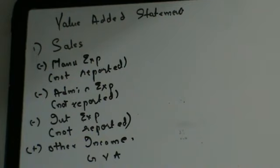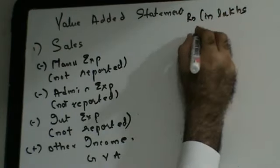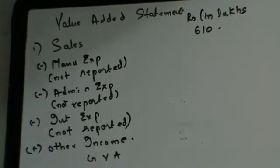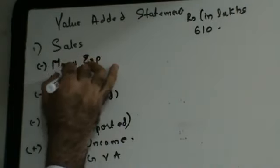Looking at your income statement, your sales is 610 lakhs. So I write this as rupees in lakhs — 610. The next thing is to find out the manufacturing expenses which have not been reported. Let's first find out the manufacturing expenses that have been reported. Looking at your income statement, production and operation expenses — that's your manufacturing expenses — the manufacturing expenses reported are 465.